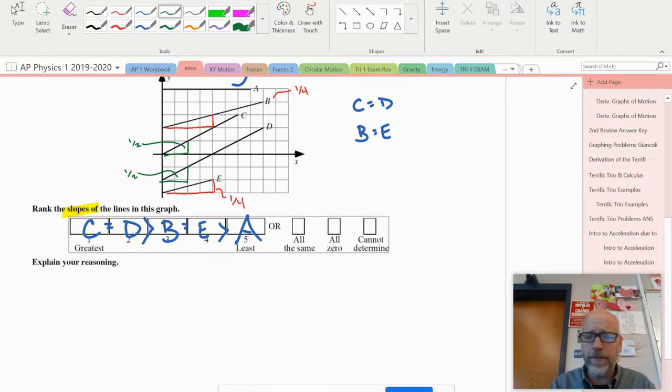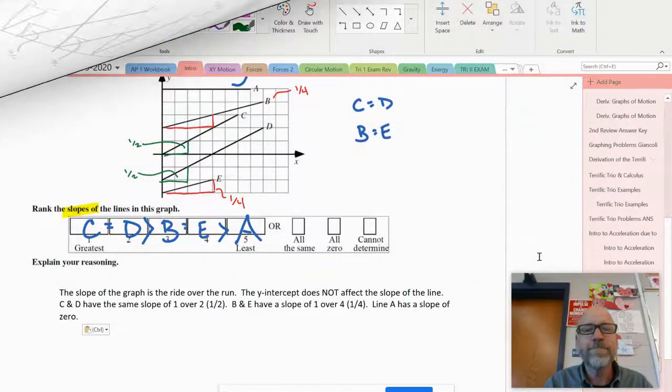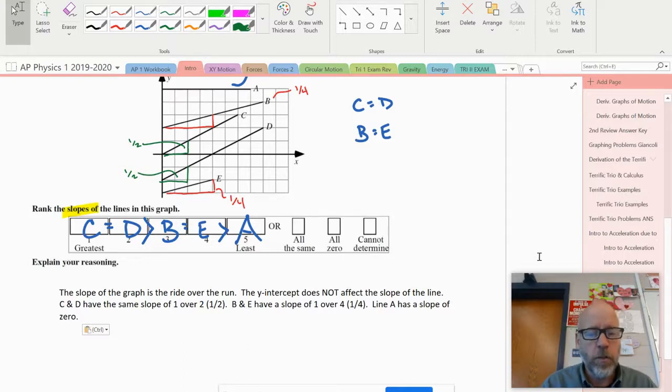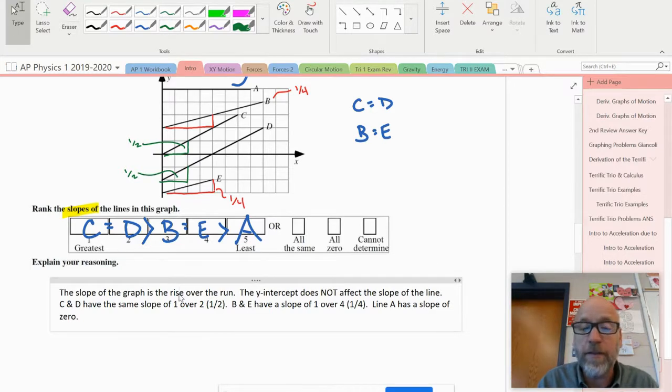Take a minute, three sentences, push pause. This is what I got: the slope of the graph is the rise over the run. The y-intercept does not affect the slope of the line. C and D have the same slope of one over two, B and E have the same slope of one over four, and line A has a slope of zero. Hopefully this video helped. Ranking exercises, they're not bad when I talk you through them, but there's a lot of little things you've got to be able to catch. I think they're a great challenge—they're difficult and they're different. Good luck, hope you guys got this.